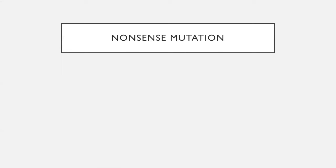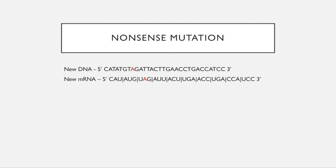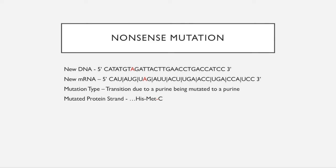A nonsense mutation often causes a lot more issues. It causes a truncation within the transcript and the translation. The mutation type is a transition due to it being a purine mutated to a purine, so it's going from a G to an A. This causes the strand to now be histidine, methionine, stop. You're not getting the other three amino acids, and so your protein is heavily truncated.